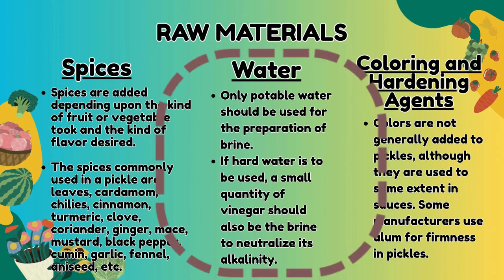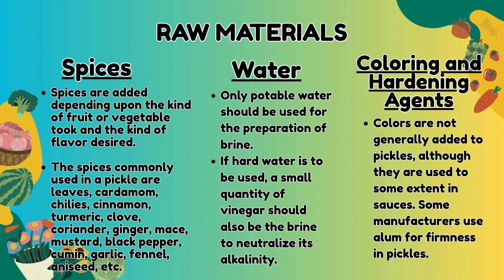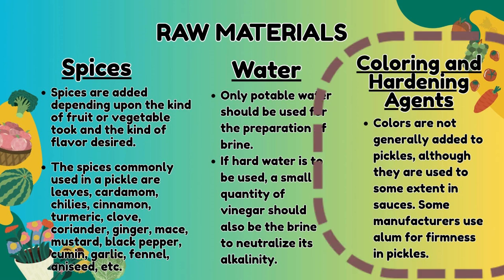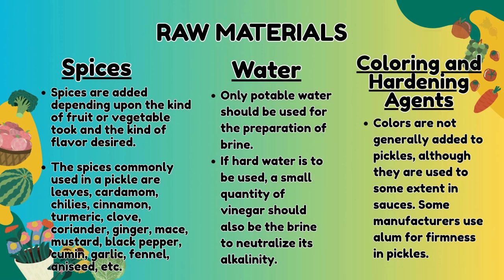Only potable water should be used for the preparation of brine. If hard water is to be used, a small quantity of vinegar should be added to the brine to neutralize its alkalinity. Colors are not generally added to pickles, although they are used to some extent in sauces. Some manufacturers use alum for firmness in pickles.